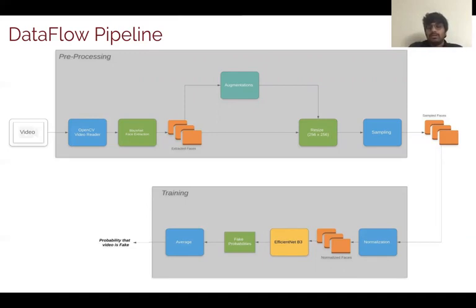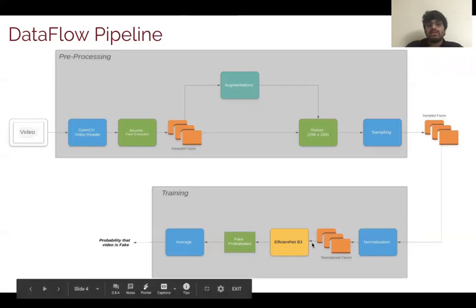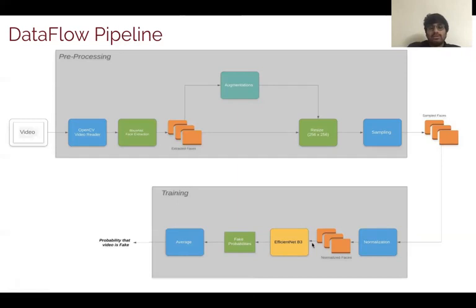These sample faces go through a training phase where we normalize them. The normalized faces are then sent into a neural network. For this purpose, I've used an EfficientNet B3 version, which is a pre-trained neural network. This network gives us fake probabilities of each frame in the video.